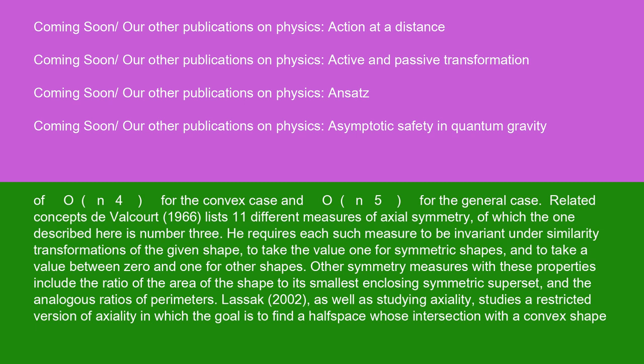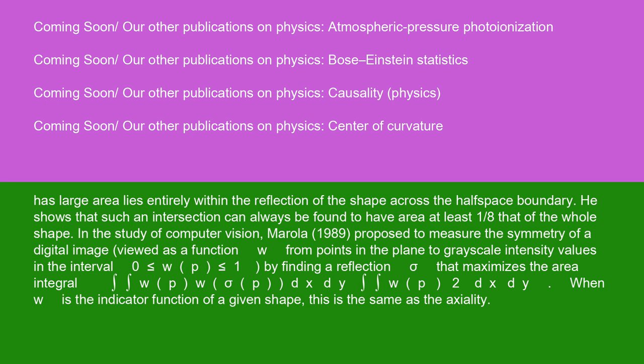Lasak (2002), as well as studying axiality, studies a restricted version of axiality in which the goal is to find a half-space whose intersection with a convex shape has large area lies entirely within the reflection of the shape across the half-space boundary. He shows that such an intersection can always be found to have area at least 1/8 that of the whole shape.